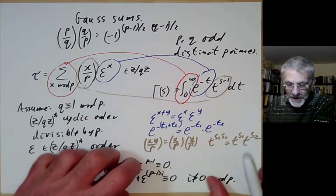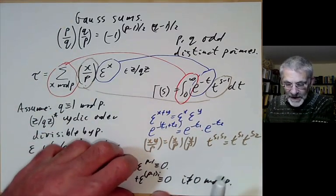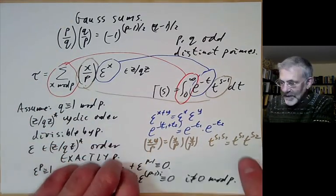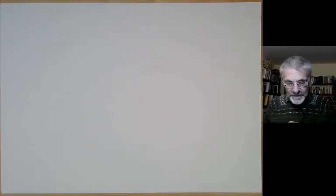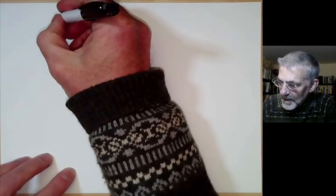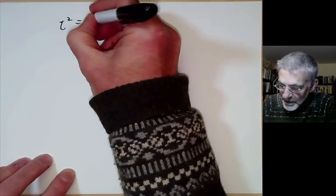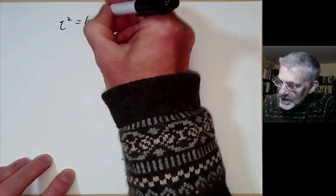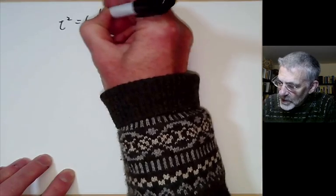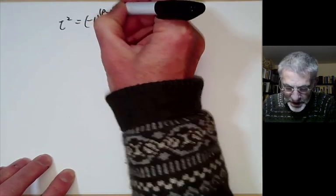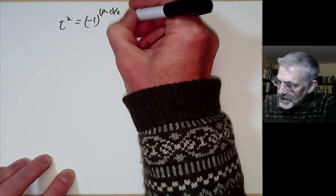Now let's write down some basic properties of Gauss sums. The first property is that tau² = (−1)^((p−1)/2) · p.